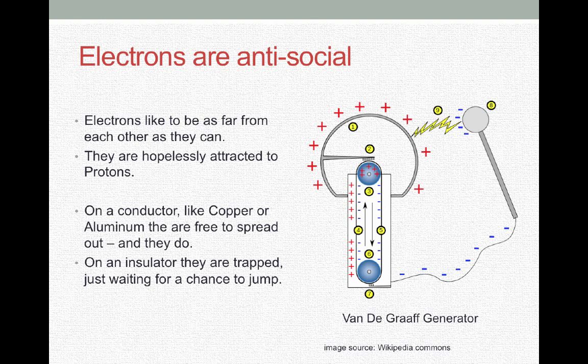The belt on a Van de Graaff generator causes charge to build up on the outside aluminum dome of the generator and an opposite charge to build up on the wand. And given enough of a charge distance, there will be a spark in between the wand and the dome of the generator. And that's the jump across the insulator of air.